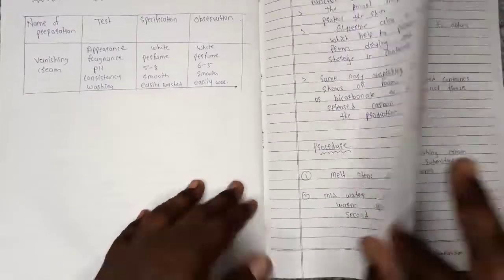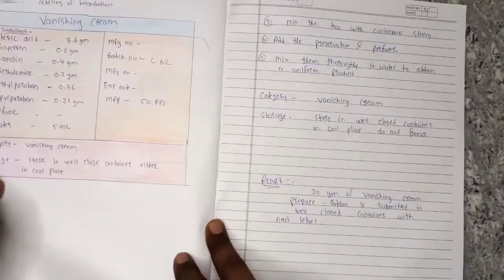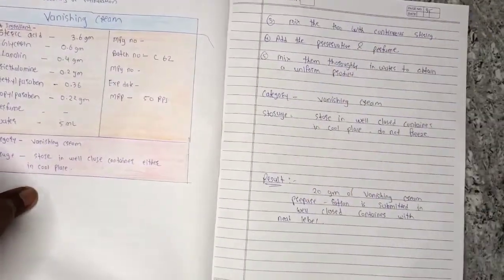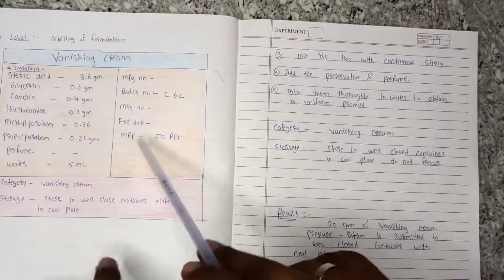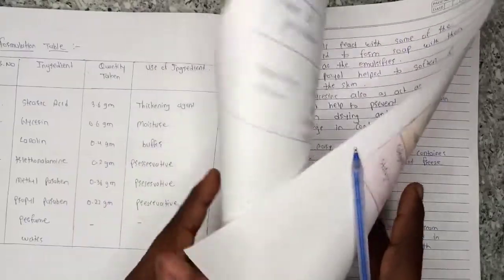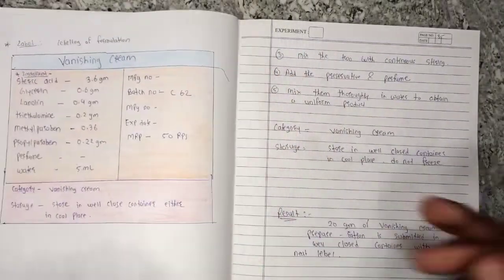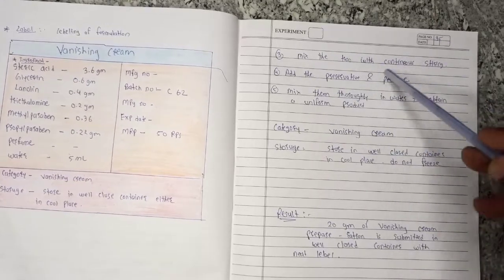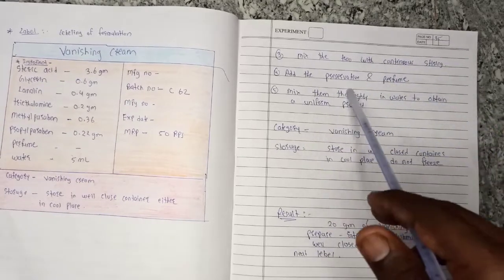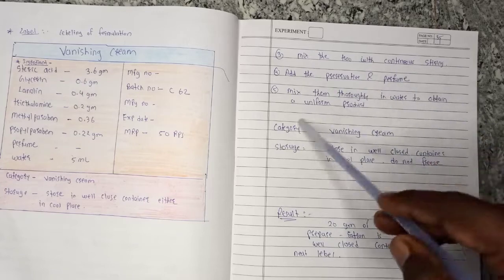After heating, you will need to mix both beakers with continuous stirring. Then add the preservatives, which we have seen in the formula table. Add them slowly and stir. After that, add perfume and mix through water to obtain a uniform product.